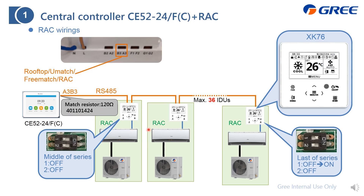On the other hand, if the wire controller has a built-in resistor inside it, we can turn that built-in resistor on or off by changing the DIP switch. If it is in the middle position, there is no need to turn it on — just keep the default setting. If it is at the last position, you need to turn it on by changing the first DIP switch to ON. Then you can use this wire controller to control, in this case, three indoor units.